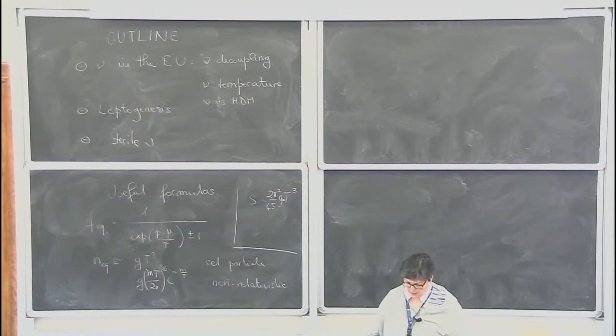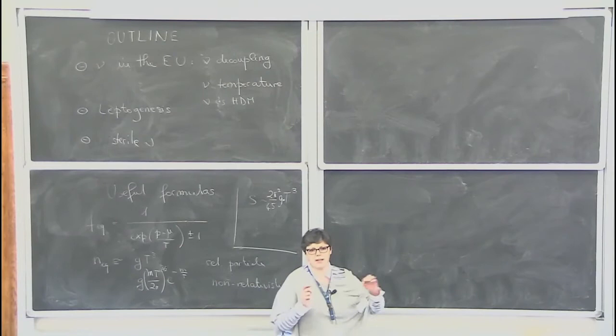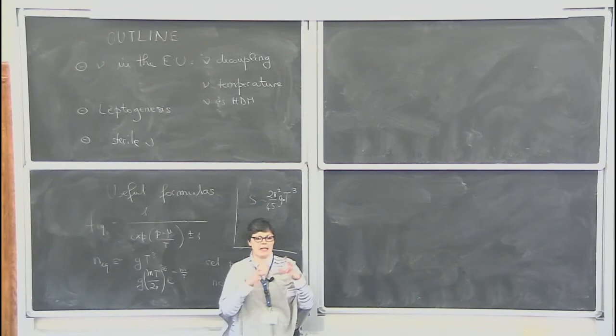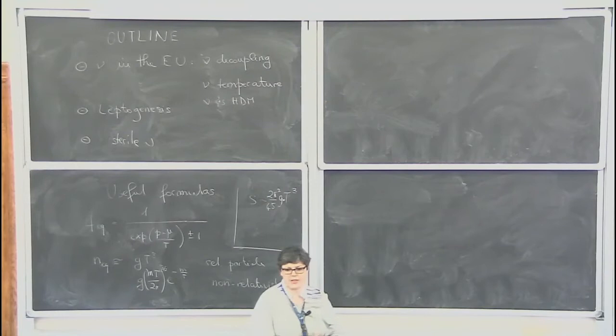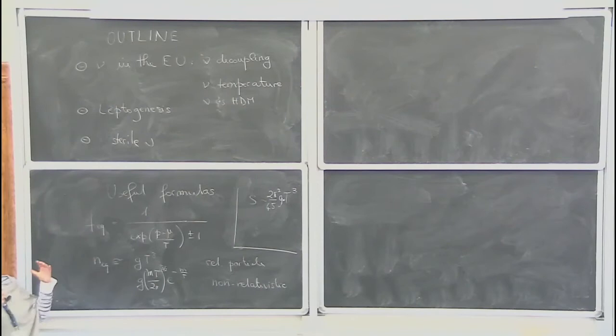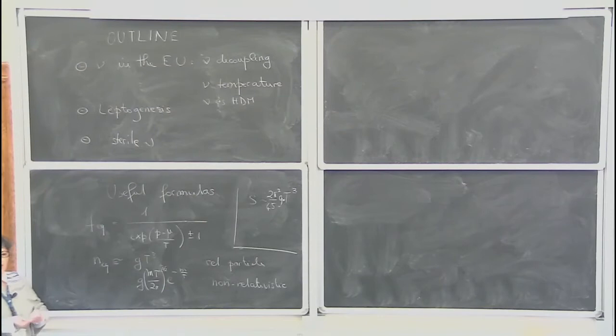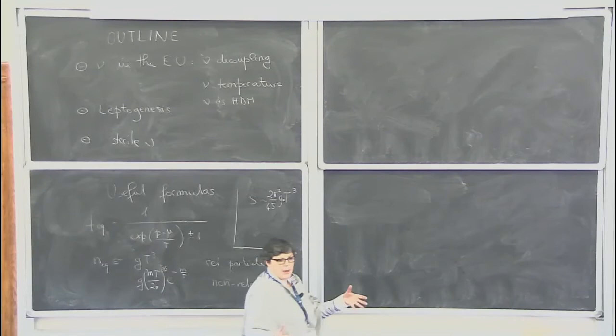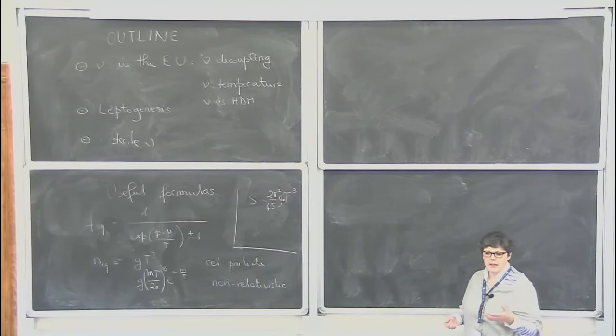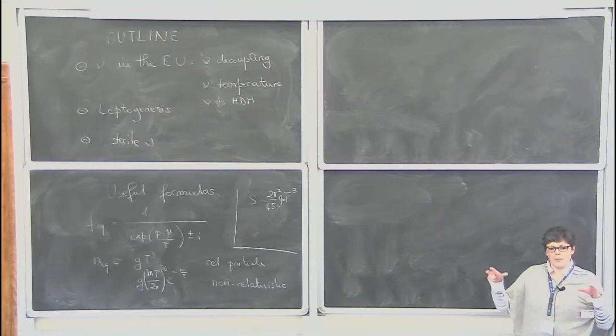A key moment in the evolution of a particle in the universe is when it goes from being in equilibrium to getting out of equilibrium, or vice versa — this is called freeze-out. The standard case is that a particle has interactions sufficiently fast to keep it in equilibrium with the rest of the plasma. At some point these interactions become too slow with respect to the expansion of the universe, and the particles don't have time to find another particle to interact with. You then freeze whatever densities and properties you have, and from that moment onwards there is just expansion and redshift.